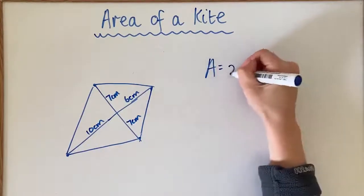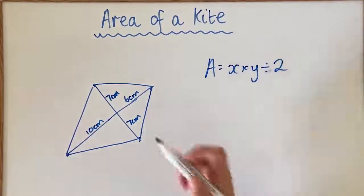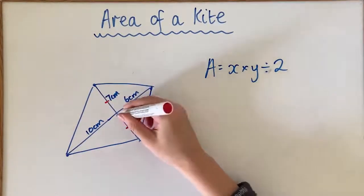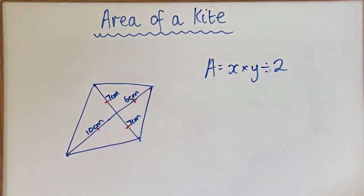So for this kite, we're still going to use the same formula. However, this one's a little bit different to the last one because it's given us this measurement and this measurement as well as this one and this one. So we actually have to do a little bit of addition before we get to it.